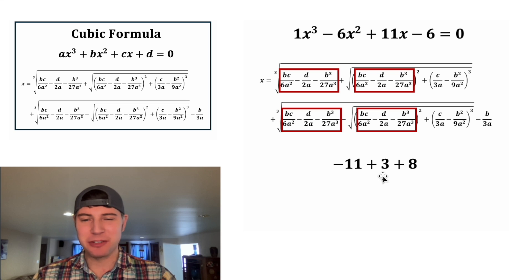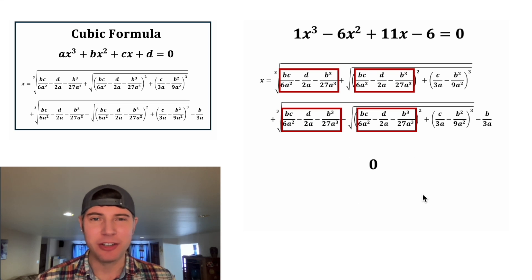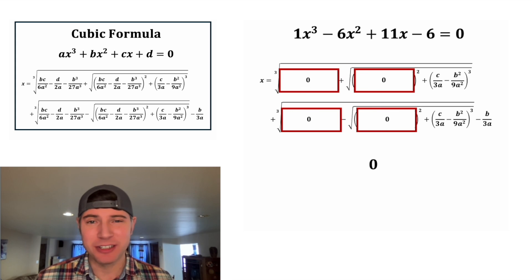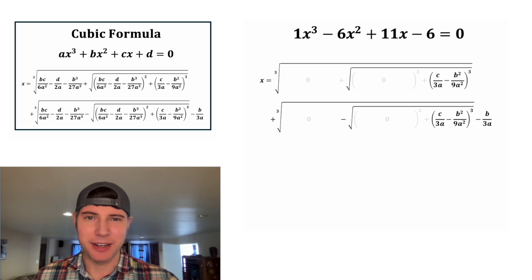Oh no, do you see what I see? 8 plus 3 is going to be 11. And negative 11 plus 11 is 0. I don't know if this is good news or bad news. All of these red boxes are going to become 0. Good news is it'll make it easier, but I'm kind of disappointed. I want it to be this really crazy equation we could work through. But as it is right now, all of this stuff is going to vanish.